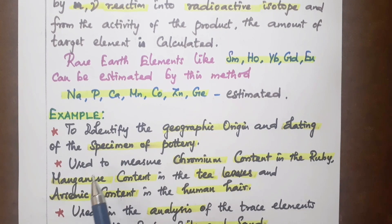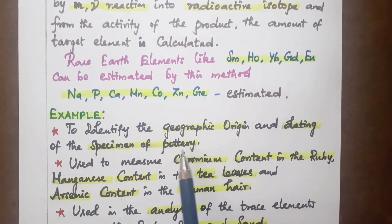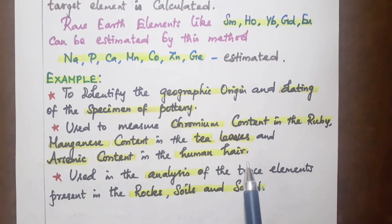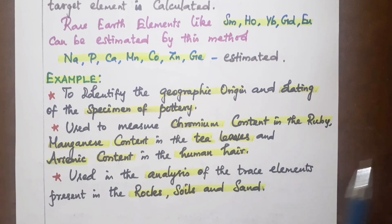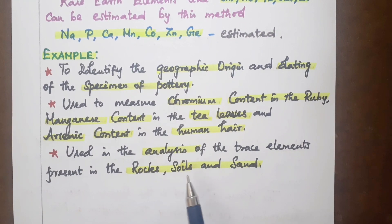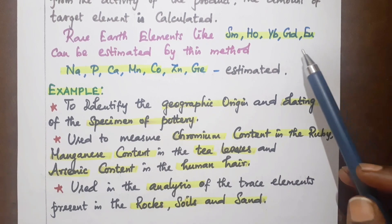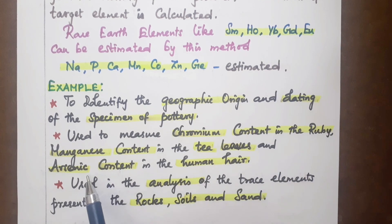Neutron Activation Analysis is useful to identify the geographic origin and for dating of specimens of pottery. The method is also used to measure chromium content in ruby, and to analyze trace elements present in rocks, soils, and sand. It can estimate organic content in human hair and manganese content in tea leaves.